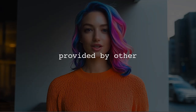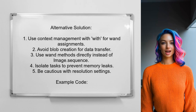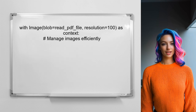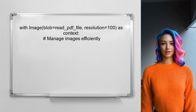Now let's look at answers provided by other users. An alternative approach to reduce memory usage with WAND involves using context management, which ensures resources are properly managed and released after use. Avoid creating blobs for data transfer, as this can lead to excessive memory allocation. Instead, use WAND's methods directly to manage images without involving Python's memory. Consider isolating tasks to prevent memory leaks, and be mindful of resolution settings to avoid creating unnecessarily large images.